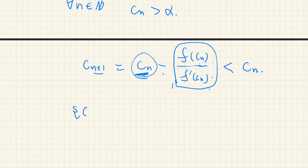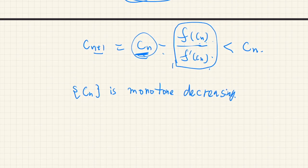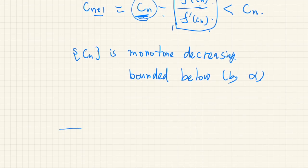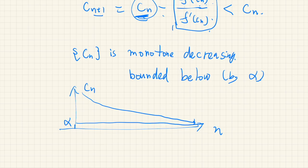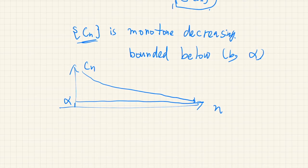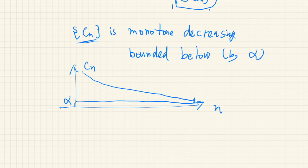So this sequence Cn is a monotone decreasing sequence. And it is also bounded below by alpha. So if we plot n against Cn, it just decreases and is bounded by alpha. By the monotone convergence theorem, this sequence must converge, and the converging value is alpha.